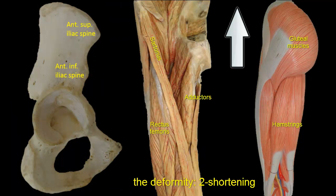Sartorius is attached to the anterior superior iliac spine, and rectus femoris is attached to the anterior inferior iliac spine.